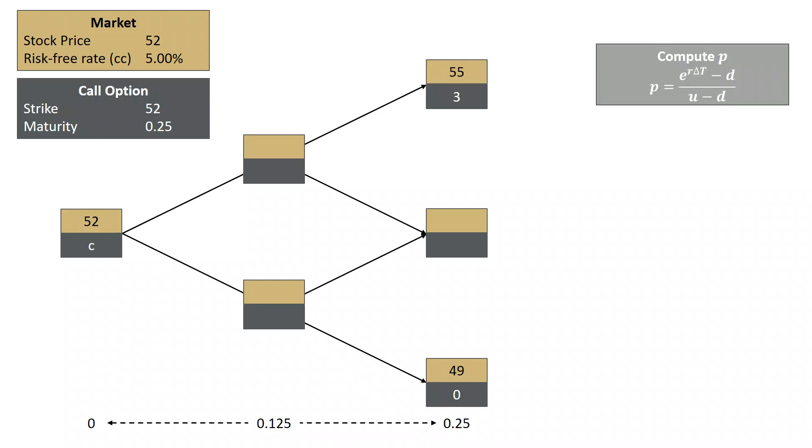Now, remember, when we compute P, the probability, that P is e to the R delta T, size of the time step, or in our case 0.125, minus D over U minus D. And so if we choose a tree such that U and D are the same everywhere, then P is going to be the same everywhere.